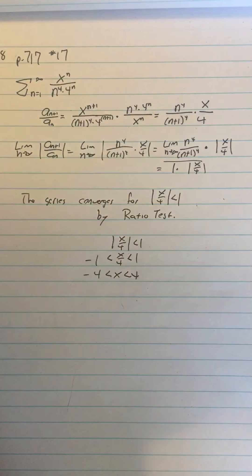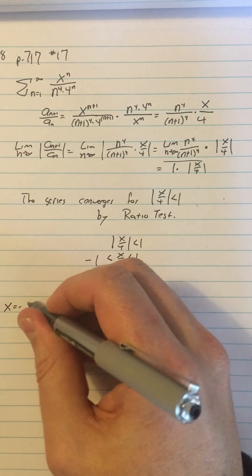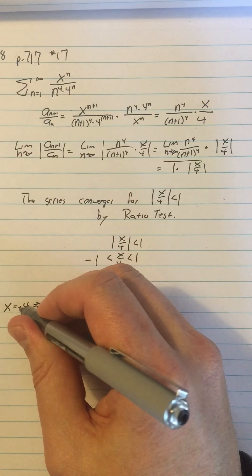So to do the endpoints, we have to look at what happens if x equals negative 4. So if x equals negative 4, what does my series end up looking like?